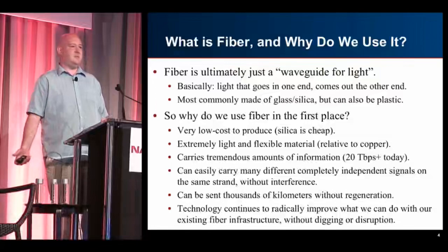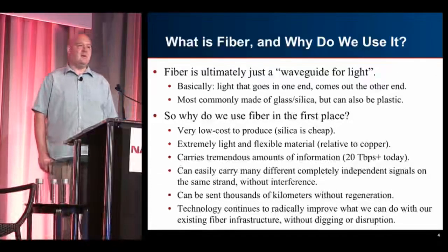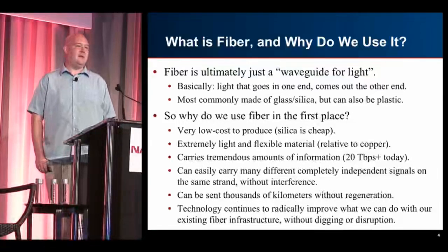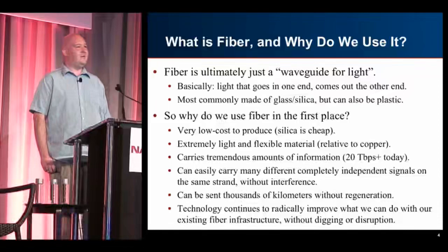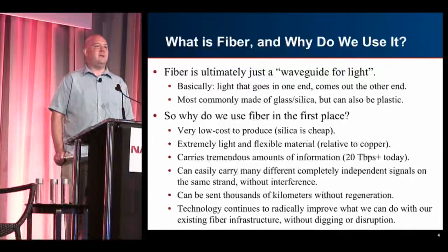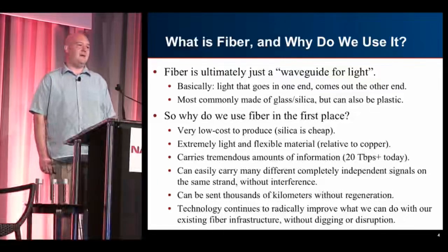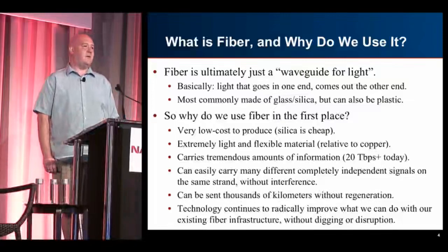The big advantage is it's really cheap to produce. Glass is cheap — much cheaper than copper. You can make very large amounts of it. It's very light; think about the infrastructure required to hold huge amounts of data cabling compared to copper — it's massively lighter and easy to transport. It's very flexible relative to copper and carries a lot of information. We've got systems easily doing 20 terabits today and that's only growing. You can easily carry many different independent signals — 50, 80, 100, 200 completely independent things — over the same fiber without interference.